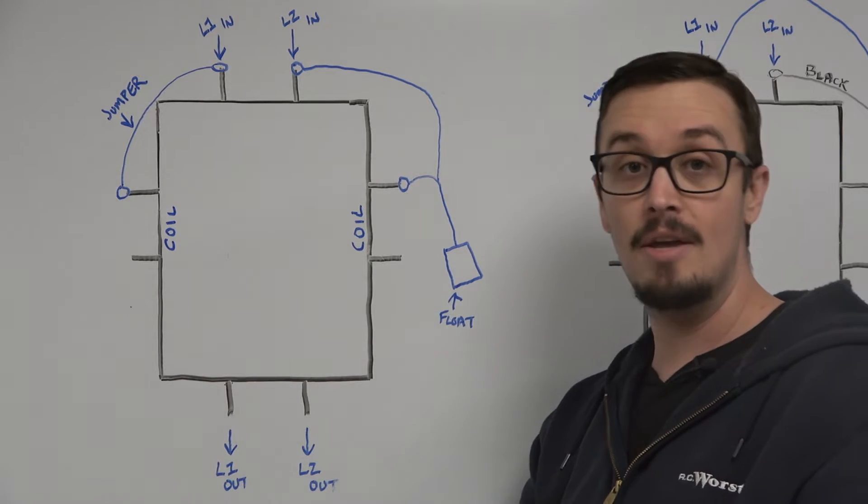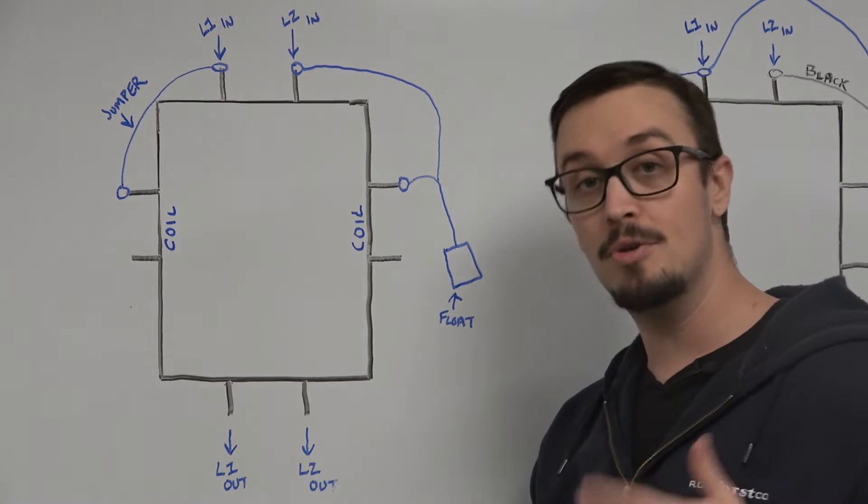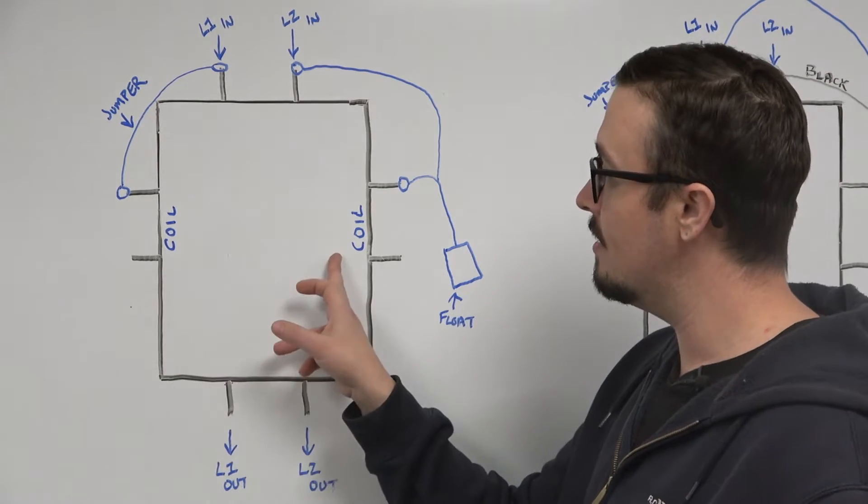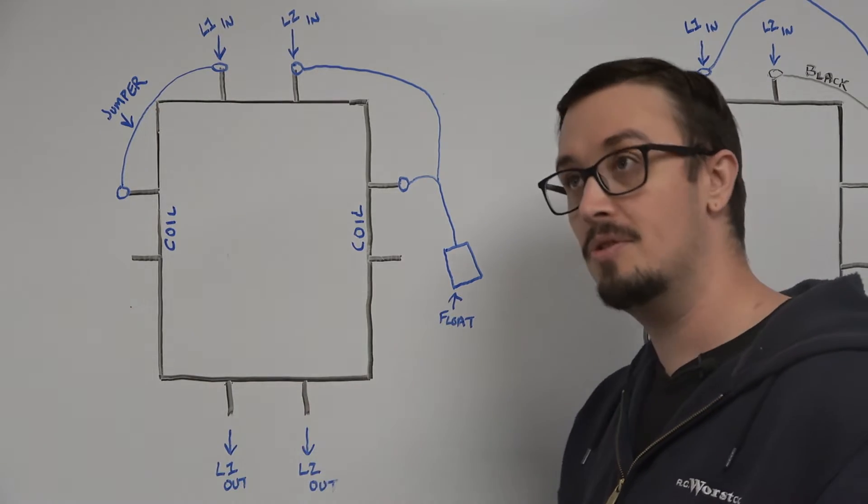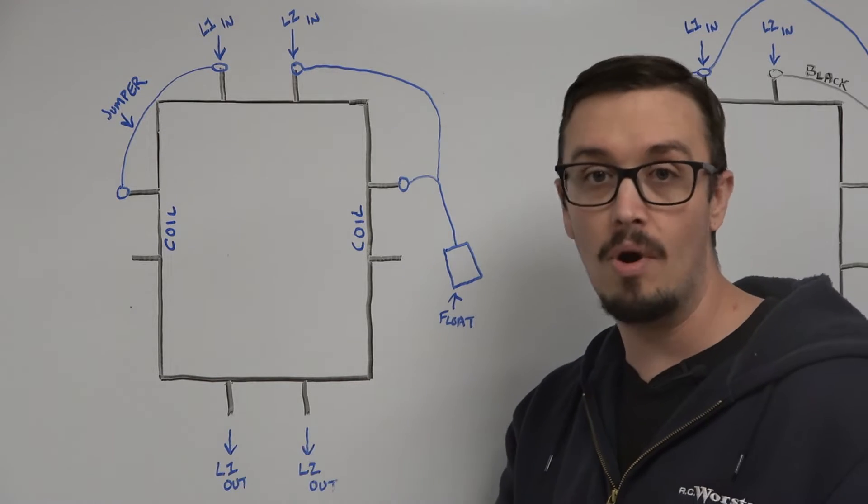But we'll start things off with the drawing. So we've got our coil here, we're doing a single float in this instance. So this could be for example filling a water tank or emptying a water tank depending on if you've got a normally open or normally closed float switch.